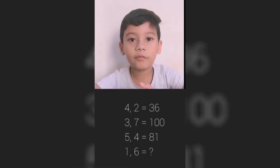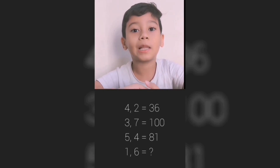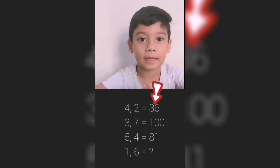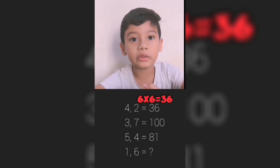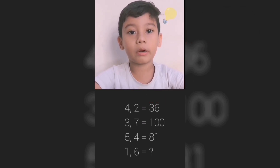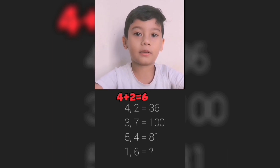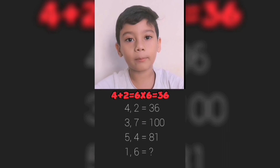Here is the solution. The first step is to think what operation we need to apply for a total of 36. So let's write 6 times 6 equals 36. So that means we need to add 4 plus 2 for the sum of 6, and multiply by the same number.